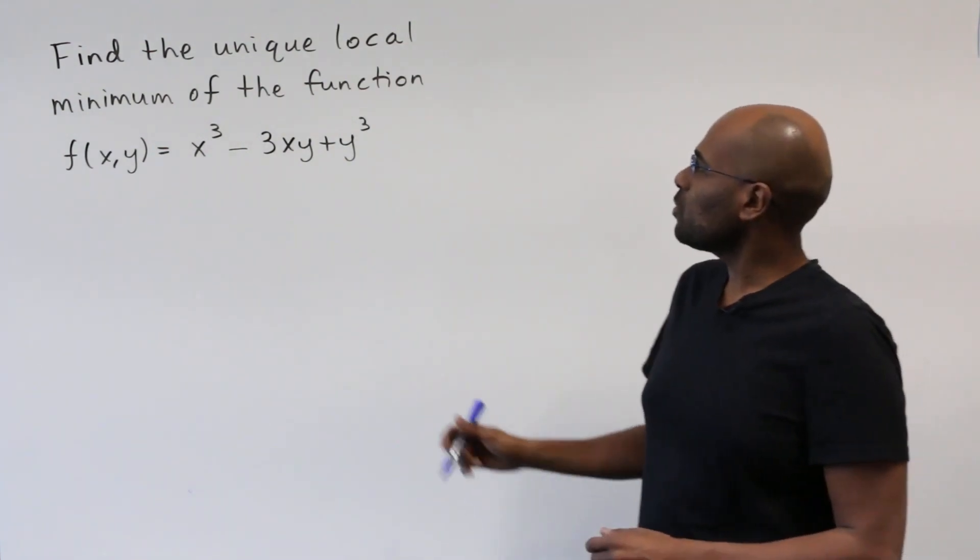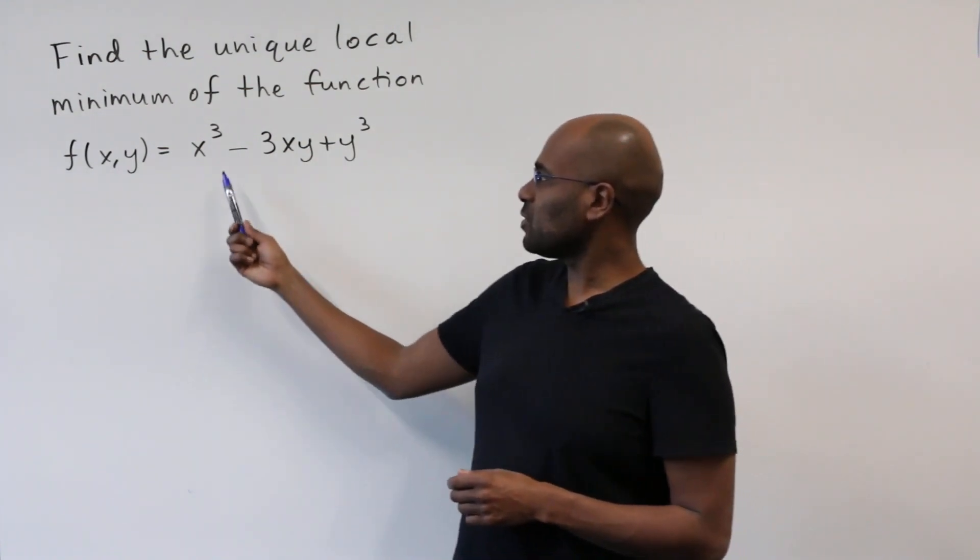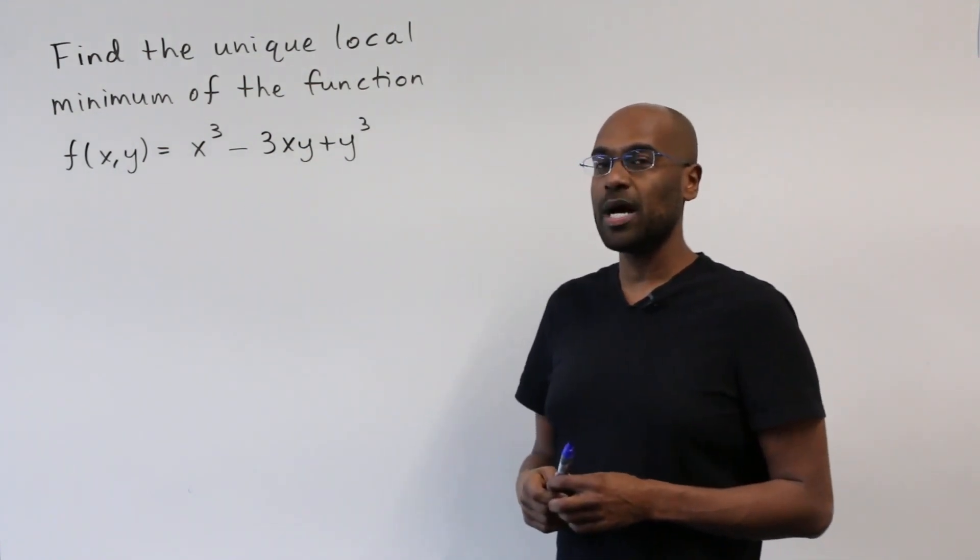Alright, so the problem in question is find the unique local minimum of the function f of xy equal to x cubed minus 3xy plus y cubed.